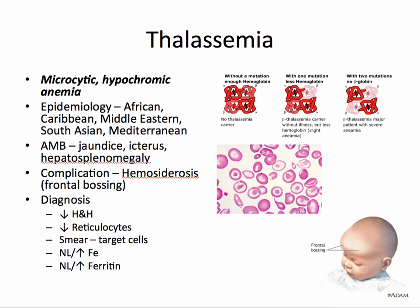Thalassemia is an autosomal recessive abnormality of the alpha or beta hemoglobin chains, resulting in a microcytic hypochromic anemia. This is most common in the African, Caribbean, Middle Eastern, South Asian, and Mediterranean populations. Because there's an abnormality in the alpha or beta hemoglobin chain, red blood cells form a characteristic target cell, as noted in this image.